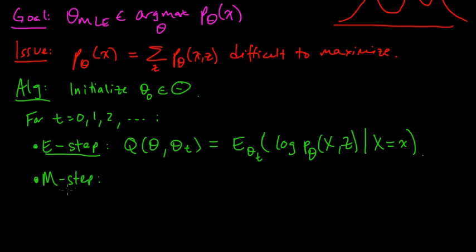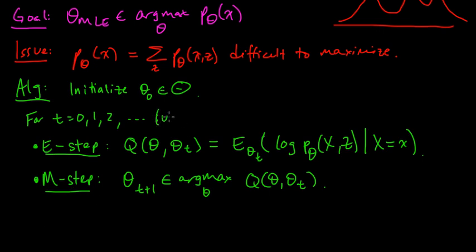And the M step, the so-called M step, is you choose theta_t+1 to be a maximizer, to be an argmax over thetas of this q function. Maximizing q(theta, theta_t). And then you iterate. So you alternate between the E steps and the M steps. So this is for t until convergence, or some maximum number of iterations.